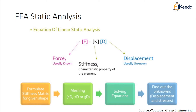Static analysis involves formulating the stiffness matrix for a given shape. Then we perform meshing of the part in one dimension or two dimensions. Then we apply the load condition and the support condition. For example, let's consider a cantilever beam. Everybody knows what a cantilever beam is — this is our cantilever beam in 1D. In a cantilever beam, we apply the load at one end and the other end is fixed. That is the support condition.